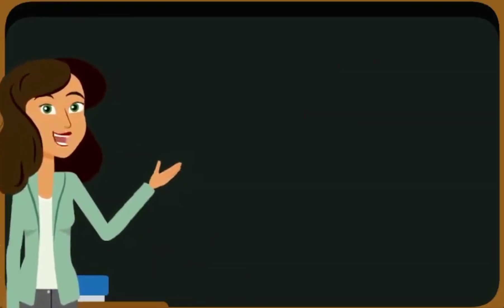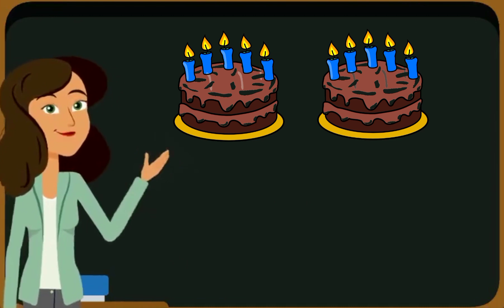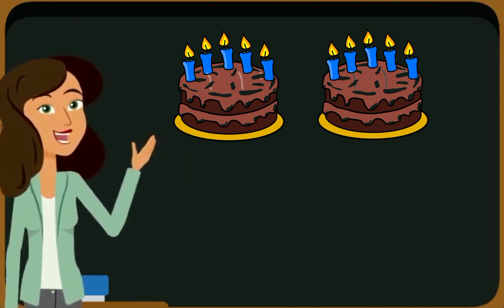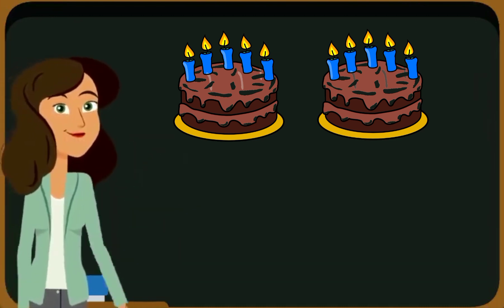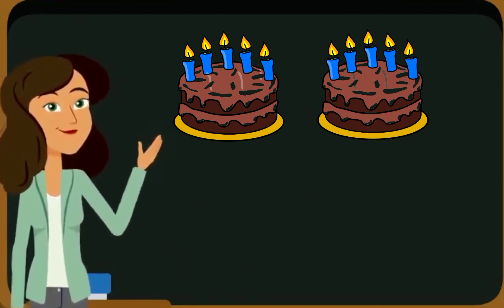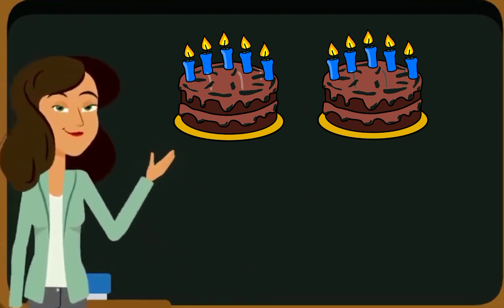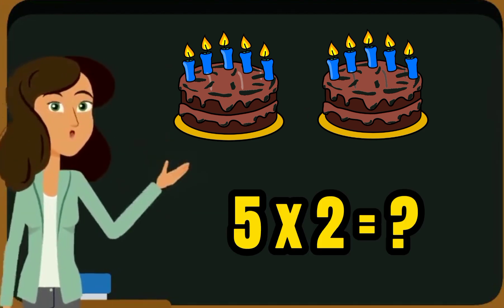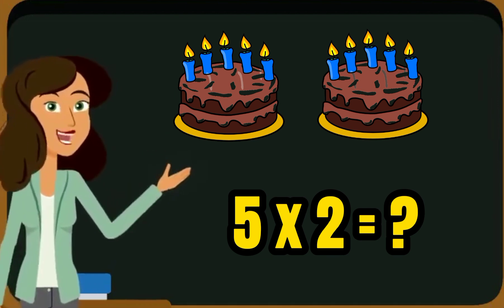Here we have some more examples. Now we are taking two birthday cakes and we have five candles on each cake. So we can write it in this way: five into two. So what will be our answer?